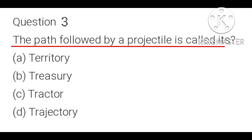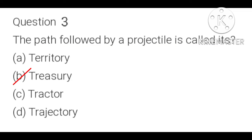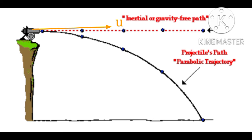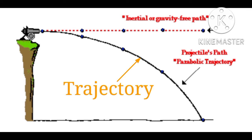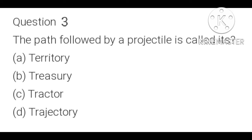Question 3: The path followed by a projectile is called its: A) territory, B) treasury, C) tractor, D) trajectory. We know that when a body is thrown with some initial velocity and allowed to move under the effect of gravity, the path followed by that body is known as the trajectory. So D is the correct option: the path followed by a projectile is called its trajectory.